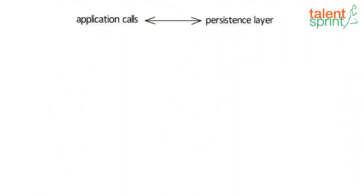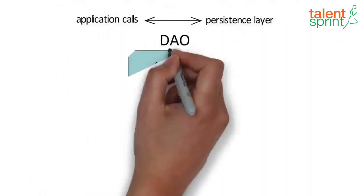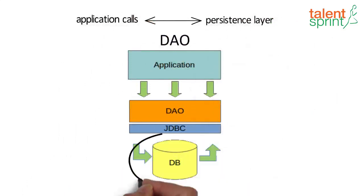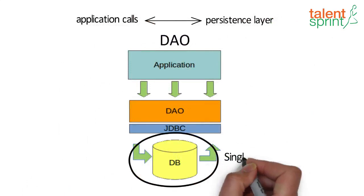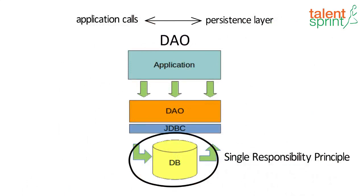A DAO is an object that provides an abstract interface to some type of database. By mapping application calls to the persistence layer, the DAO provides some specific data operations without exposing details of the database. This isolation supports the single responsibility principle.